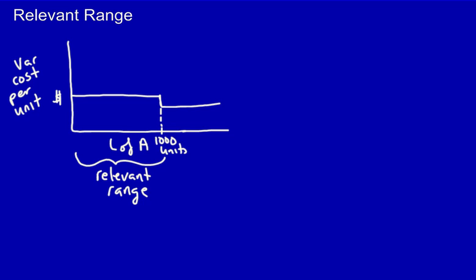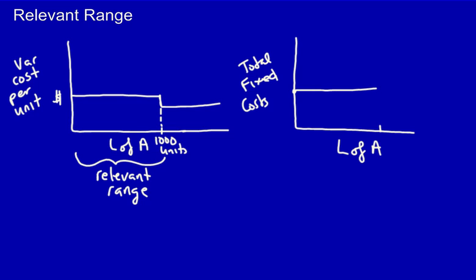Is the same true for the fixed costs? Absolutely. Looking at level of activity and our total fixed costs, it may be that our fixed costs are set up to a thousand units. But if I want to produce more than a thousand units, I'm going to have to open a new shift.